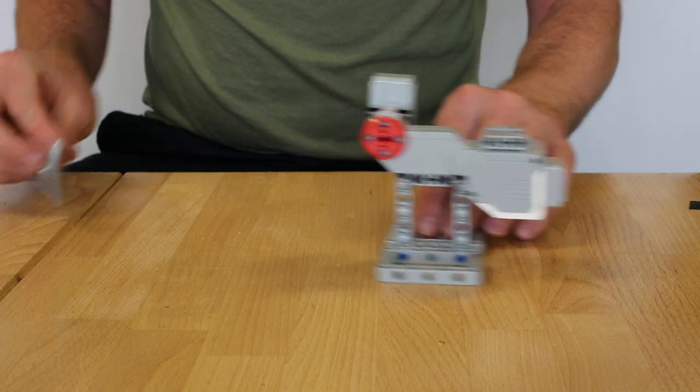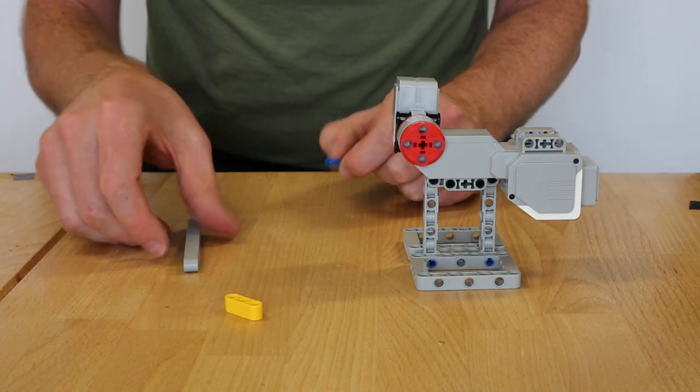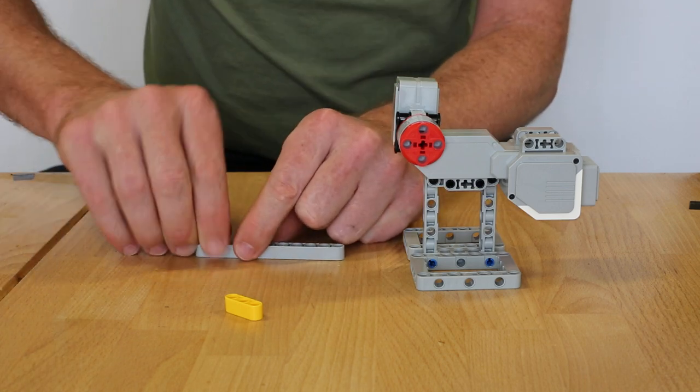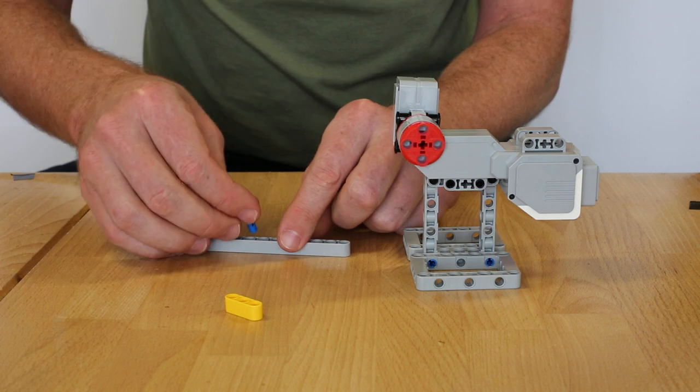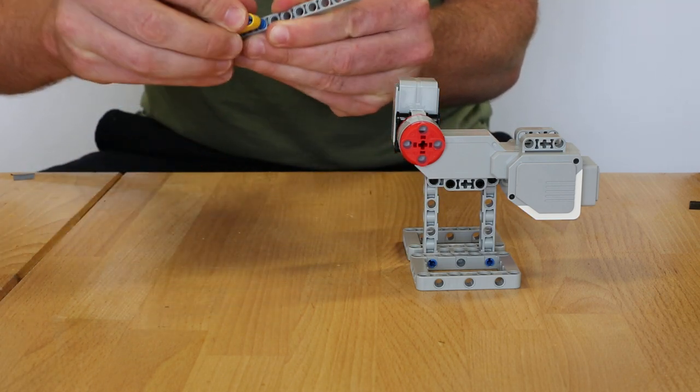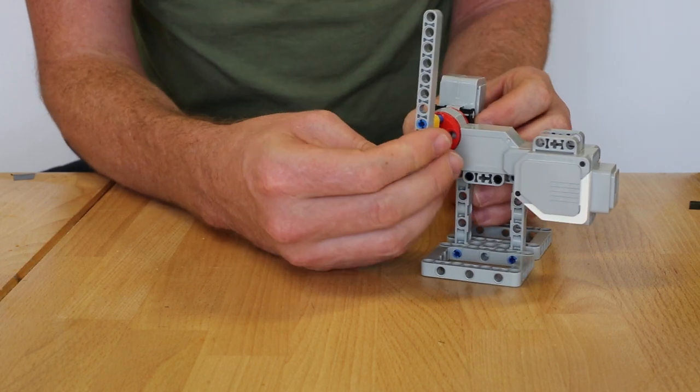Now the last thing to do is make the pointer arm. I have a three rod and an eleven rod and two long blue clips. I'm putting the clips in there and there like that, and then the three-long like that. This is going to sit here like this.